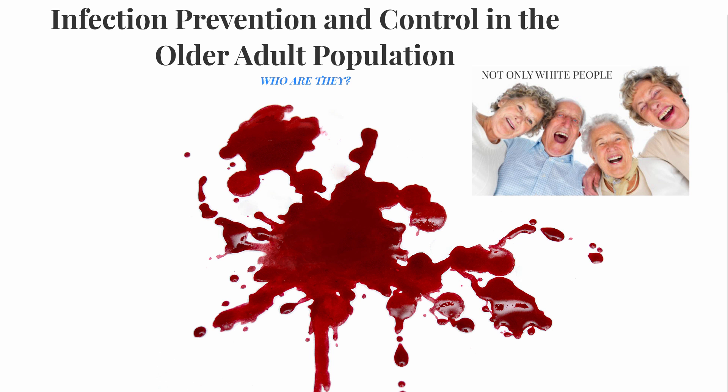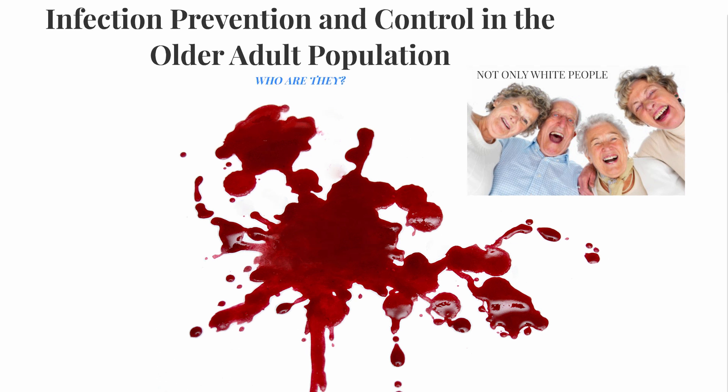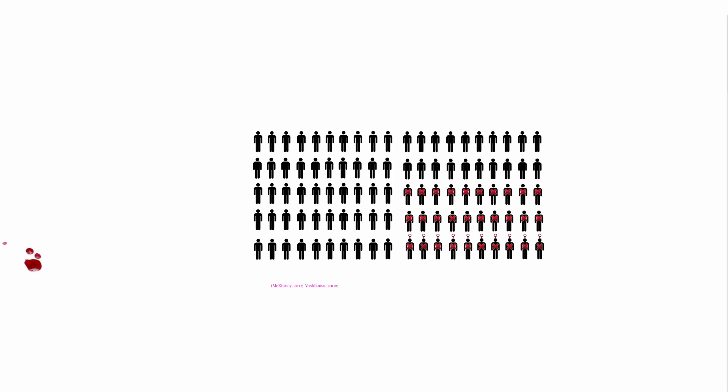Let's start off with a few numbers and facts. One third of all deaths in people 65 years and older are due to infections. However, when you look at people 65 years and older who live in long-term care facilities, that number jumps to 63% of all deaths.